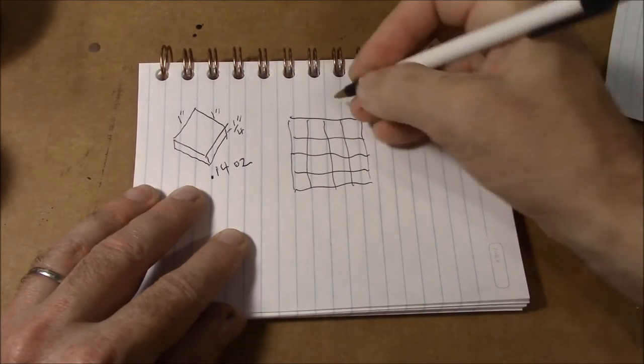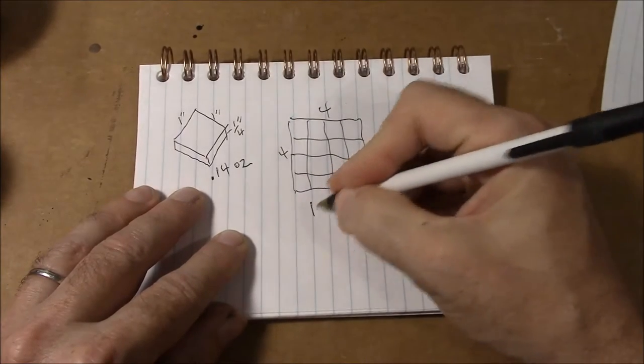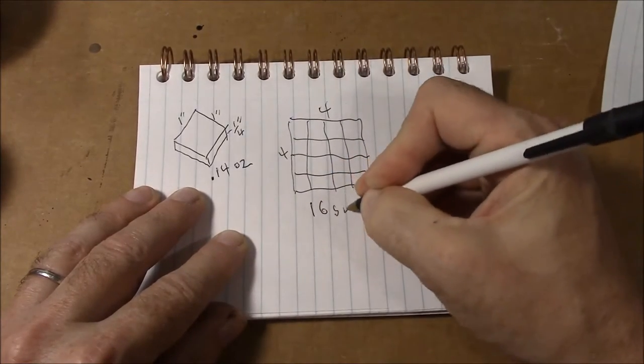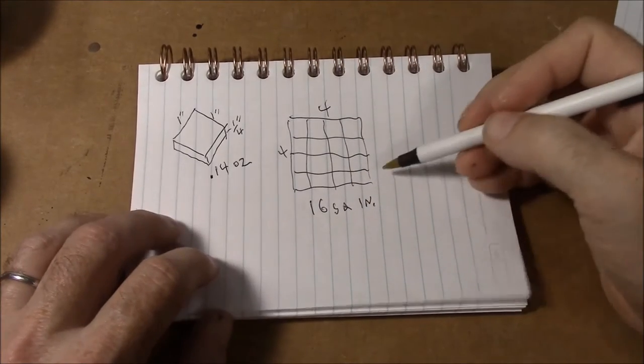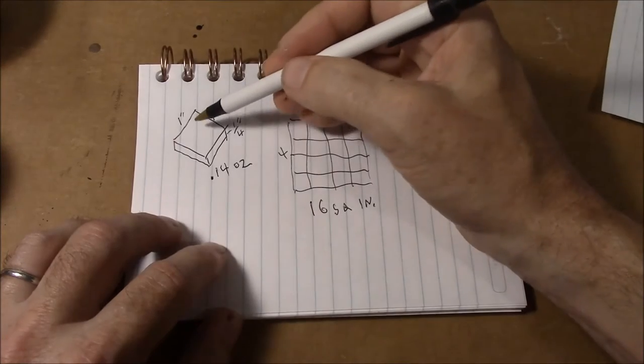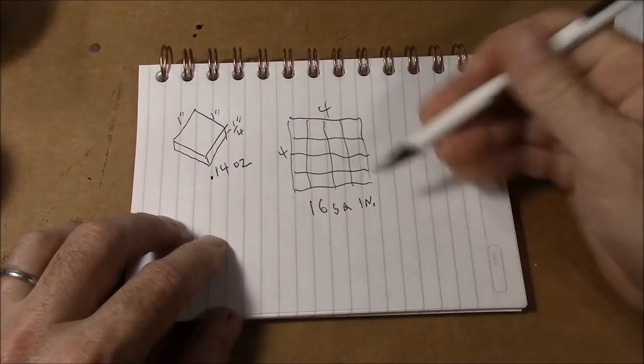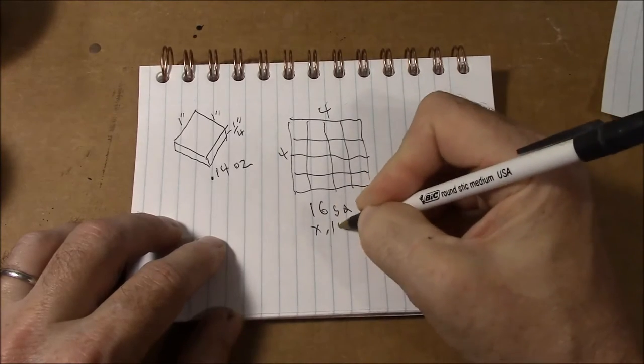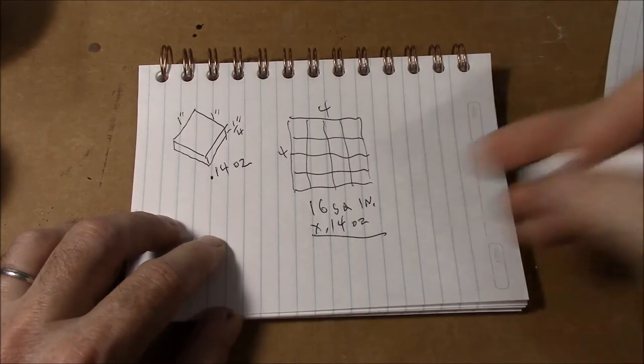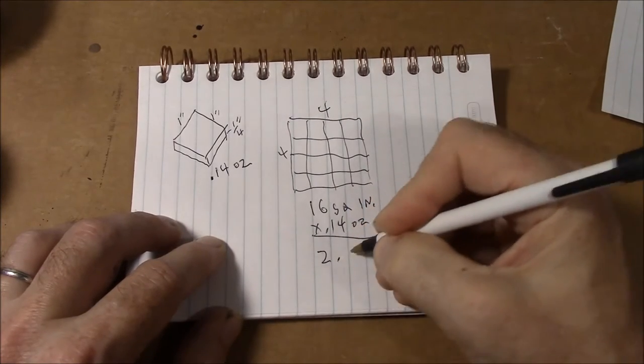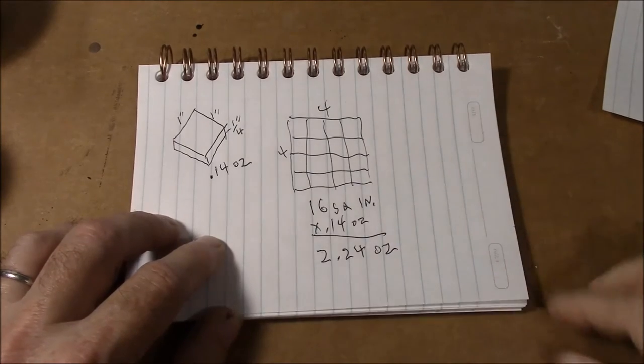So what I've got, I've got four inches going this way and four inches by going this way. Well four times four is sixteen. So I've got sixteen square inches of material that I have to do. Well one square is 0.14 ounces but I've got sixteen of these squares. So I'm going to take it times 0.14 ounces and let's see how many ounces we have. If you do the math that ends up being 2.24 ounces of material that you have to mix up.